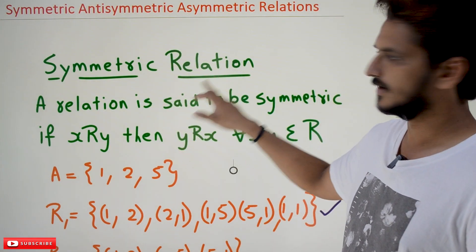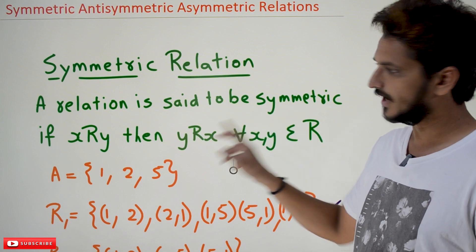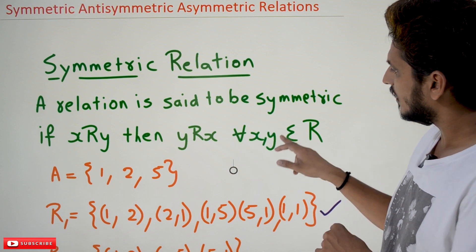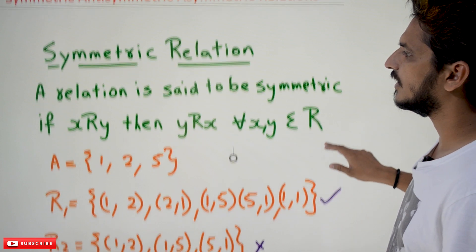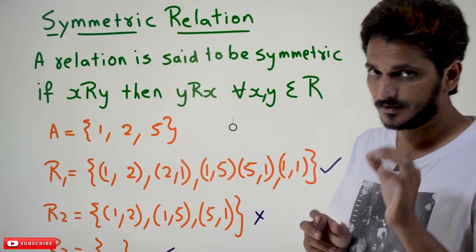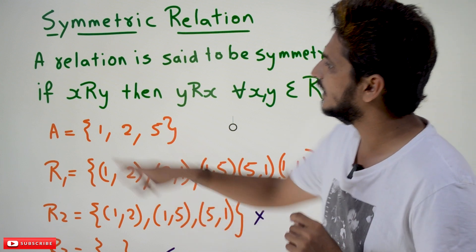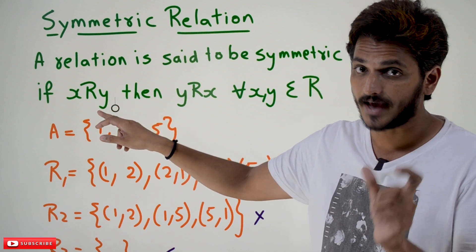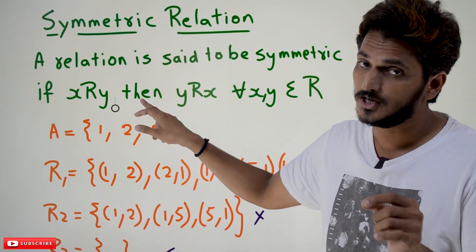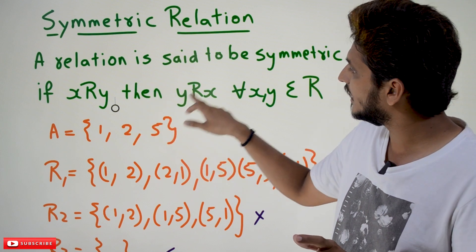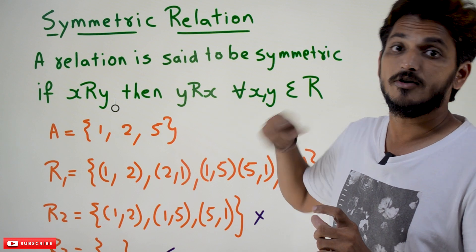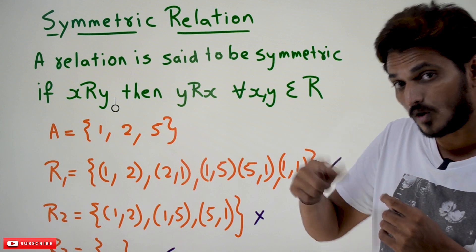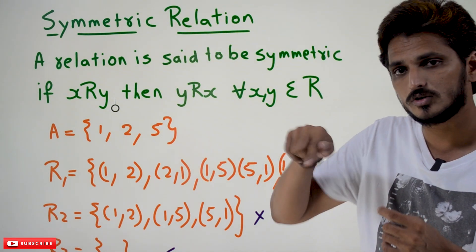Symmetric relation. A relation is said to be symmetric if x relates y, then y relates x, for all x, y belonging to that relation. If you have an ordered pair (x, y), then you should definitely also have the ordered pair (y, x). You need to check this for all the x, y pairs that belong to that relation.